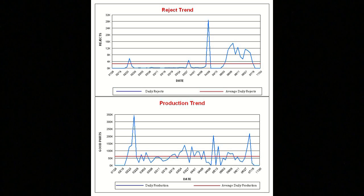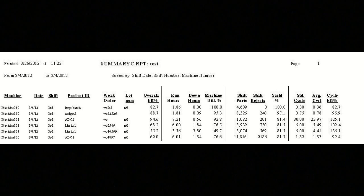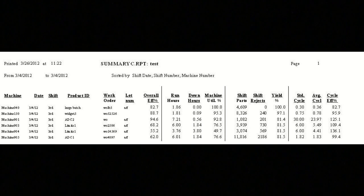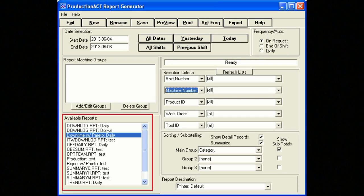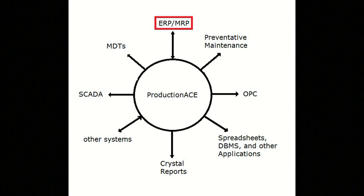We also provide a template to start from so customers can make their own reports from scratch. They copy the resultant file into the correct directory, and the report appears in the selection list of the report generator component of Production ACE.